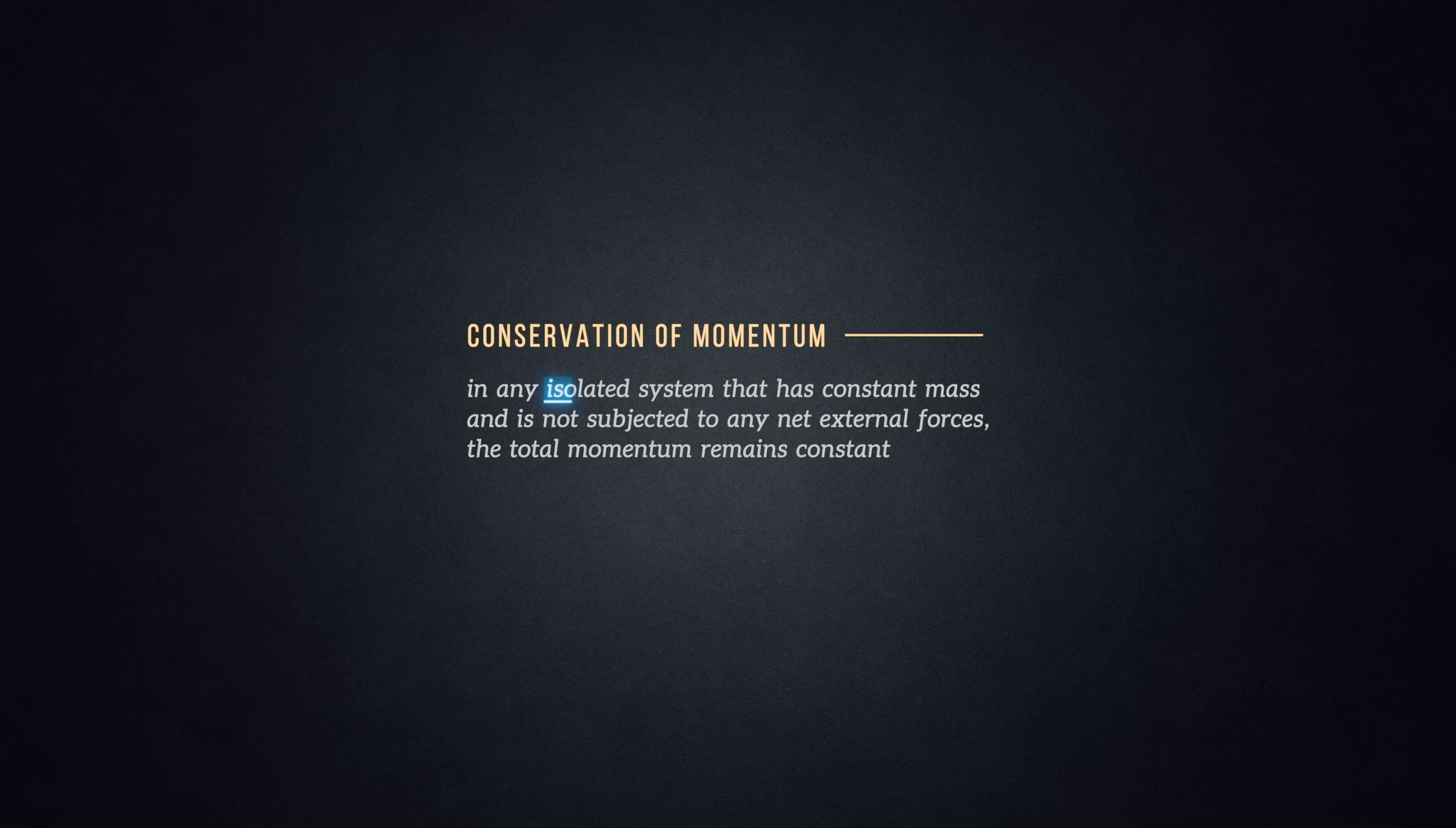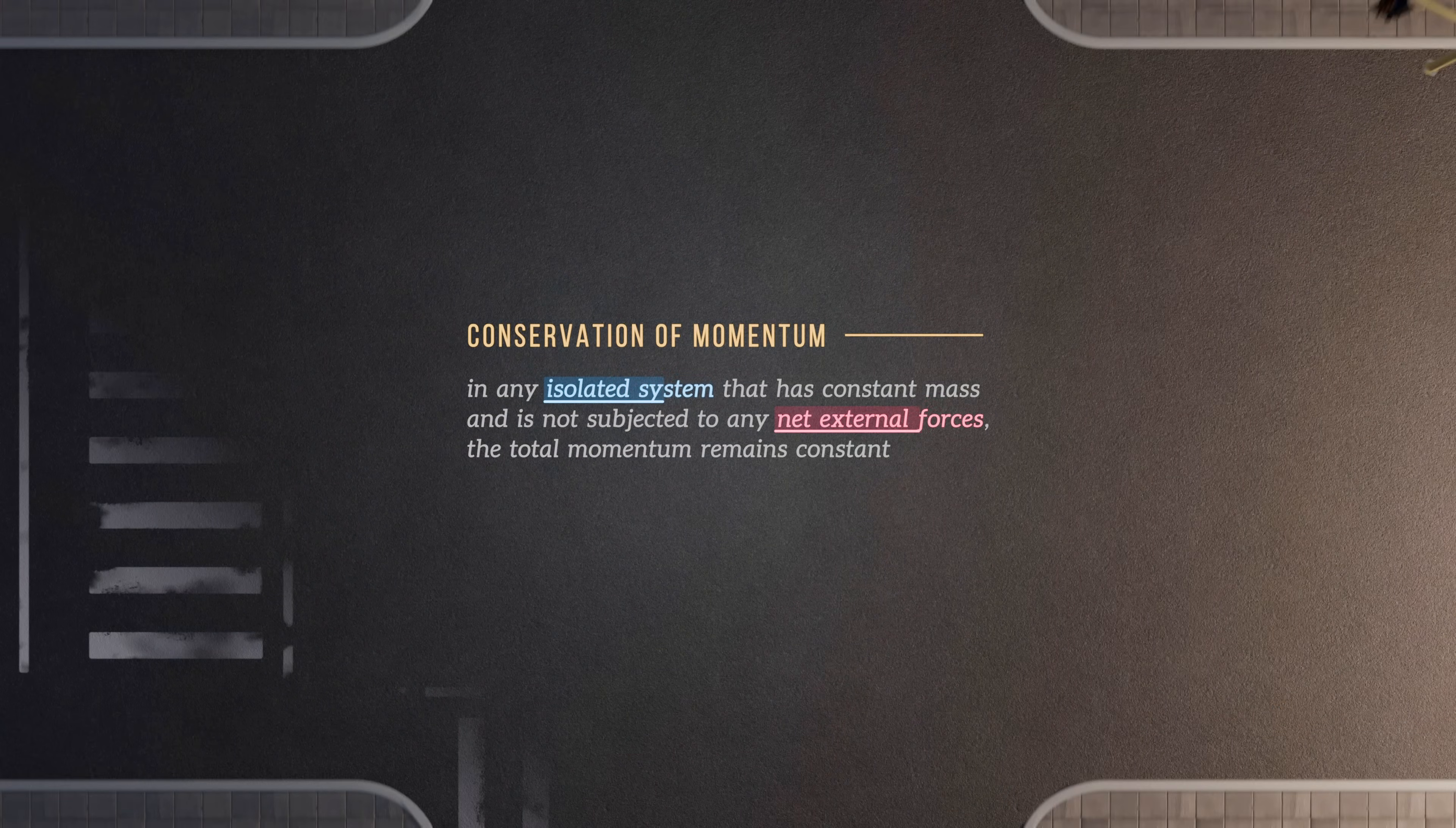An isolated system is a self-contained unit. Nothing enters or leaves, and net external forces are any forces originating from outside the system. The net part means that if external forces are present but cancel each other out, they don't affect the total momentum, and momentum is conserved. Let's apply this to a real world scenario.